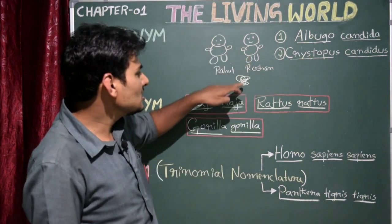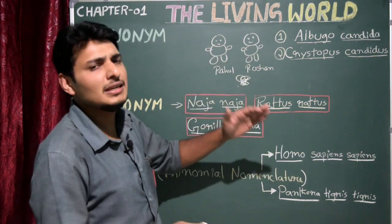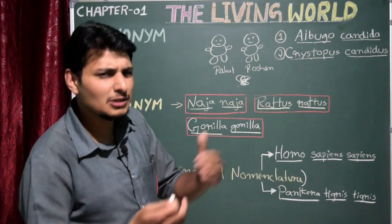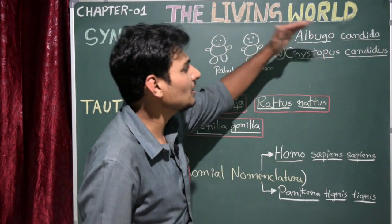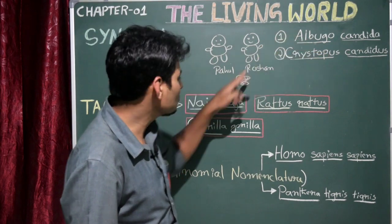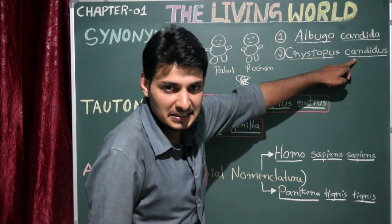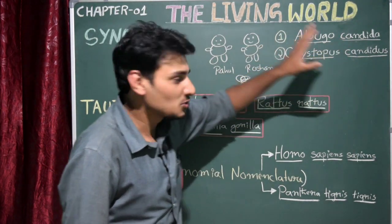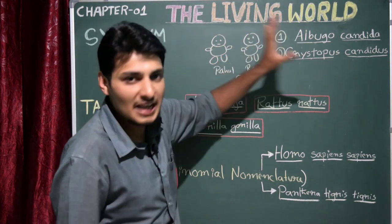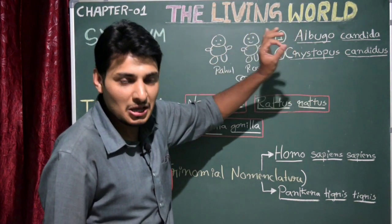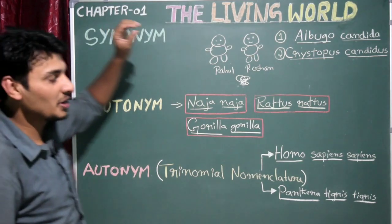Later, after three years, Roshan works on the same algal species and renames it — he modifies the name and gives another scientific name to the same algae: Christopos candida. So that means one organism is having two scientific names. Now we have to understand what a synonym is.